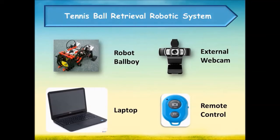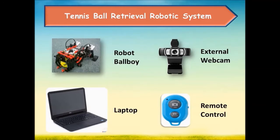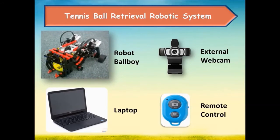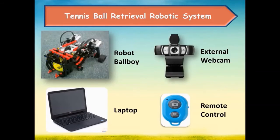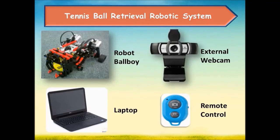Therefore, we decided to tackle this issue by creating a system which includes only a camera, such as a webcam, and a wheeled robot to act as a ball boy. This robot carries no camera but only a proximity sensor to detect the tennis ball. Therefore, it is piloted by the same external webcam which is also acquiring the positioning images.